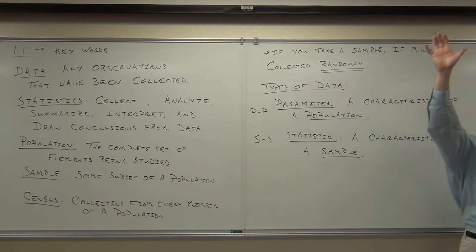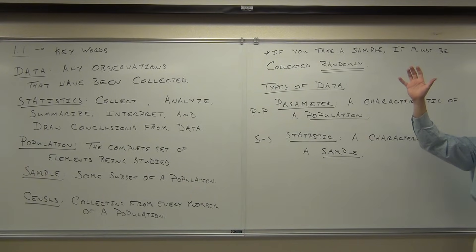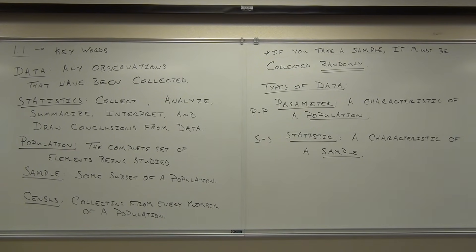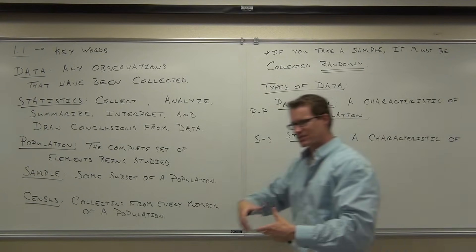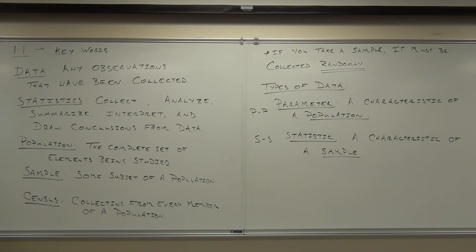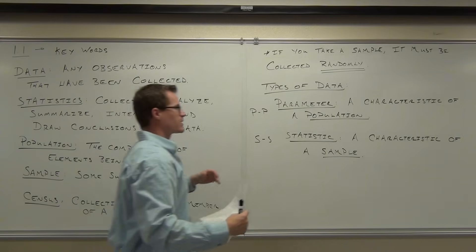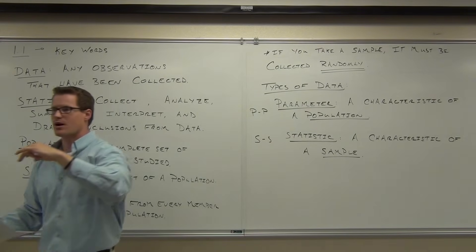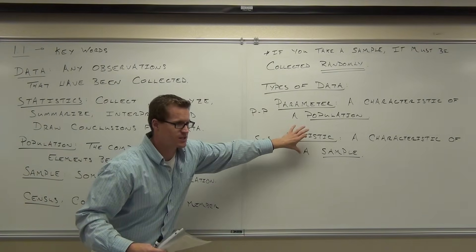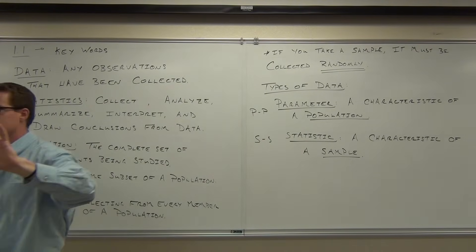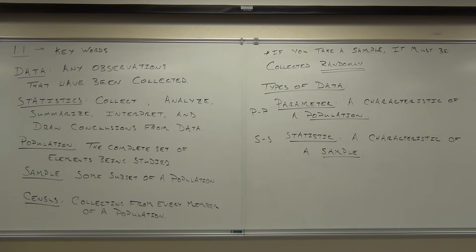Which one is a population-based thing - parameter or statistic? Parameter. And which one goes with samples? Statistics. That's what this class is based on - we're going to be mostly working with sample statistics. So to recap: data, statistics, population is a whole group, sample is a small group. Characteristics of populations are parameters; characteristics of samples are statistics. They're both characteristics - it's just what group you are referring to. Now we can move on to the types of data.